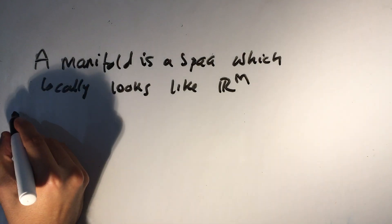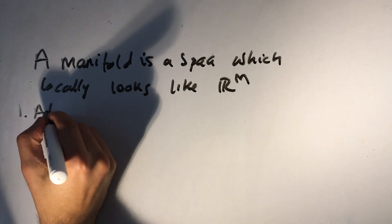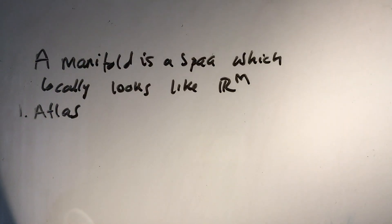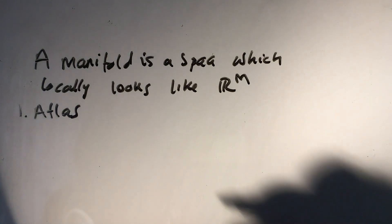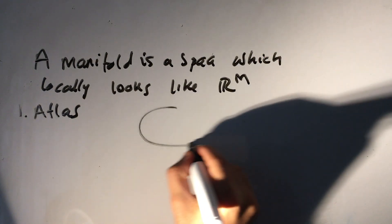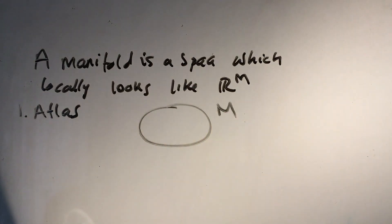One of them is what's called the Atlas. So what do we mean by Atlas? Suppose we have an M-dimensional manifold.